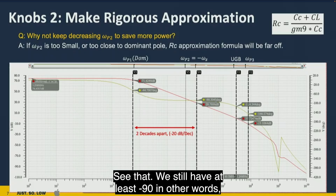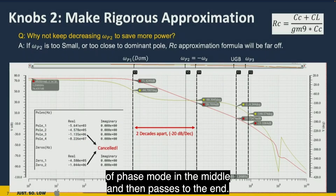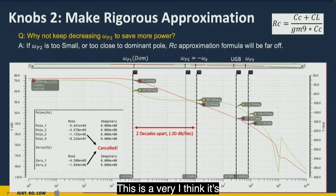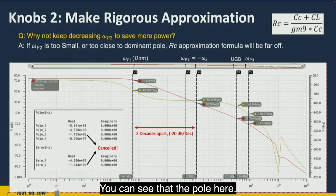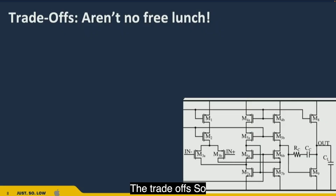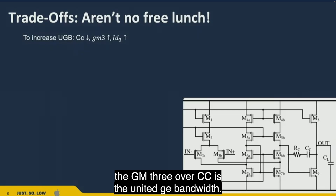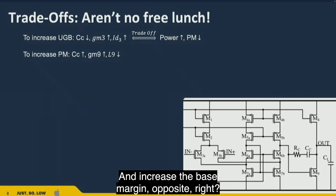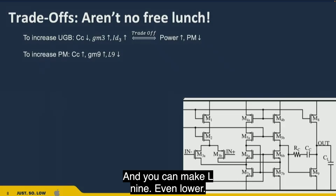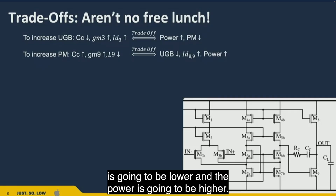The pole-zero analysis confirms that the poles cancel perfectly, giving excellent phase margin. The trade-offs are: to increase unity gain bandwidth, lower CC (gm3/CC defines unity bandwidth), but this trades off phase margin and power. To increase phase margin, do the opposite. The minimum length L9 of 0.18 µm is already at its lower limit, and pushing further would lower unity gain bandwidth and increase power.